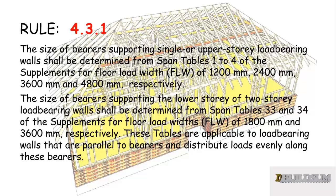So depending on what your floor load width is, you need to go to the right table. The size of bearers supporting the lower story of a two-story load-bearing wall shall be determined from tables 33 and 34, if that's applicable to you — table 33 being for a floor load width of 1,800 and table 34 being for a floor load width of 3,600. So if you're doing the lower story of a two-story building, you need to go to table 33 or 34.